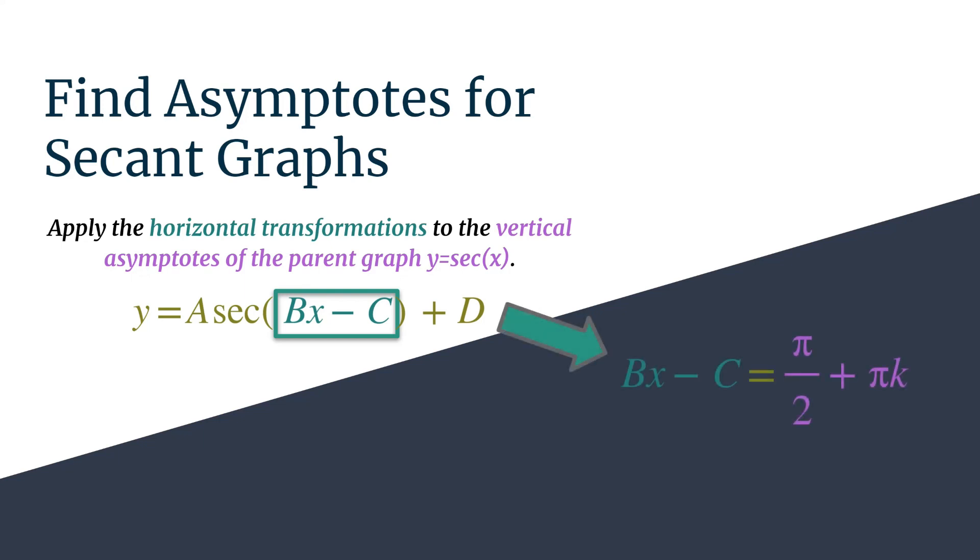Okay, so this is what it looks like. We will take those horizontal transformations, those inputs of secant, and set them equal to π over 2 plus π k, the vertical asymptotes of our parent secant graph.